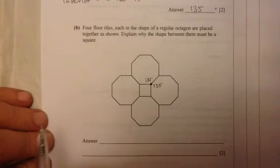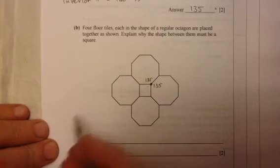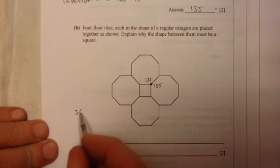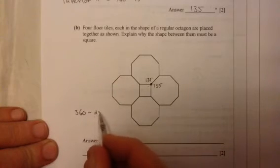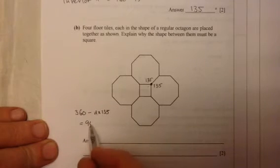So this angle must be 360 take away 2×135. So 360 take away 2 times 135 is 90 degrees.